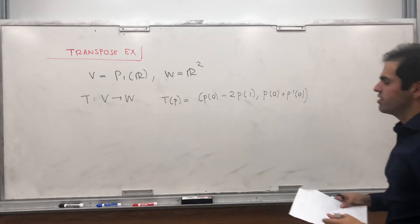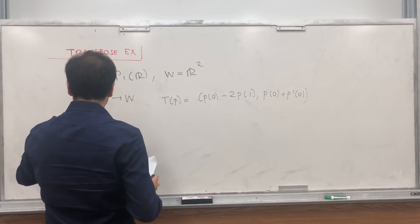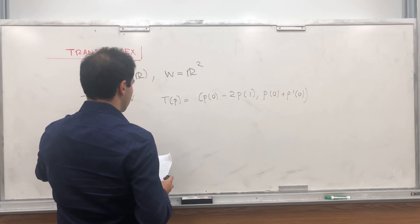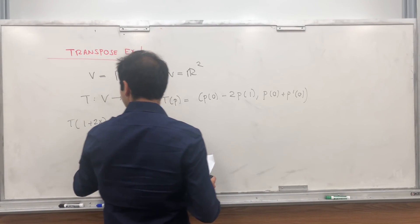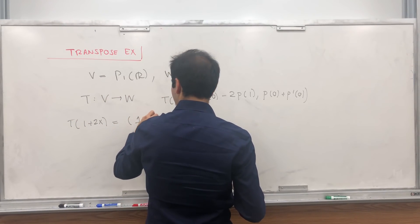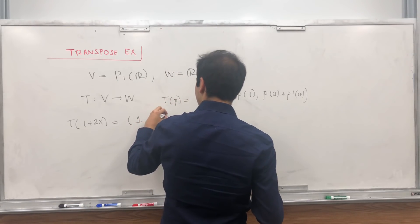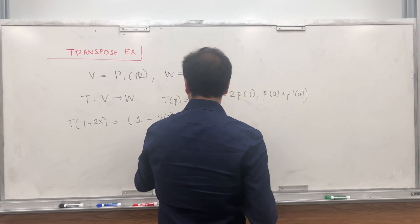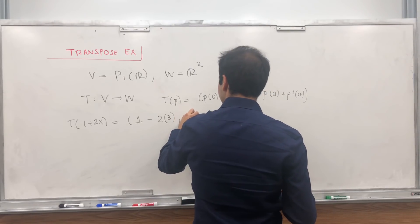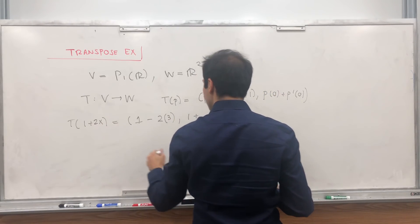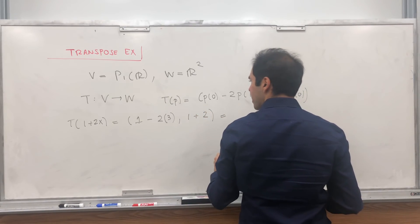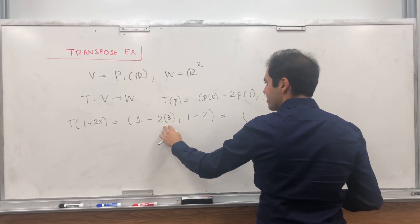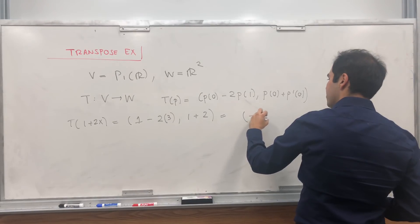For example, T of 1 plus 2x equals, so it evaluates it at 0, so you get 1, minus 2 times this evaluated at 1, which is 3, and it evaluates it at 0, and the derivative, which here is 2, at 0, and you get 1 minus 6, which is minus 5, and then 3.